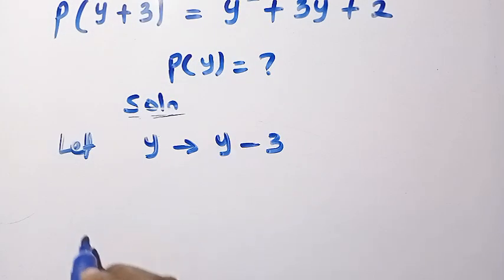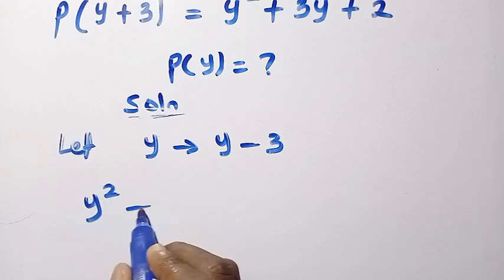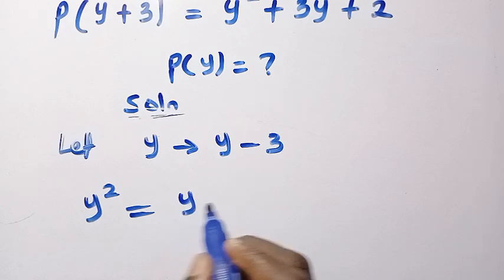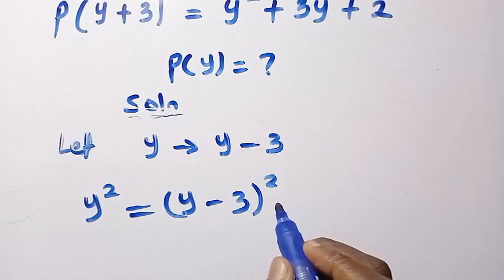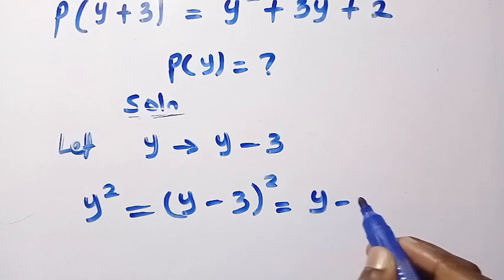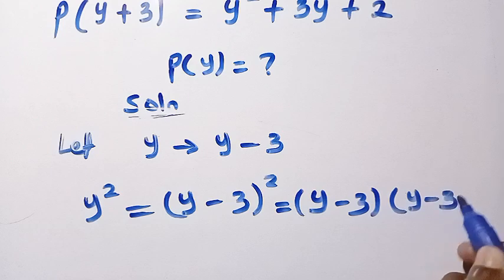So by testing for the first one, if we have y squared, which has been changed to y plus y minus 3, then we have it as y minus 3 raised to the power of 2. When we expand this, it means we write it in 2 times as y minus 3 multiplied by y minus 3.